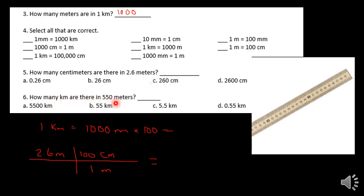Same method for: how many kilometers are in 550 meters? To convert 550 meters to kilometers, draw the grid line. Put meters on the bottom to get rid of it, and kilometers on the top. The unit conversion is 1 kilometer equals 1,000 meters. Everything on top you multiply — 550 times 1 is still 550. Then divide by 1,000 on the bottom. So 550 divided by 1,000 equals 0.55 kilometers.